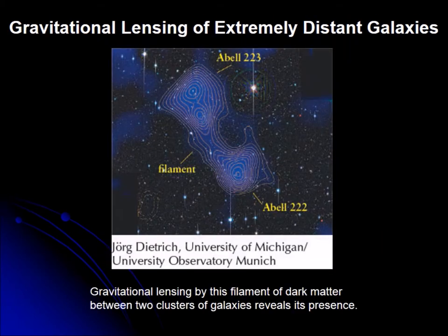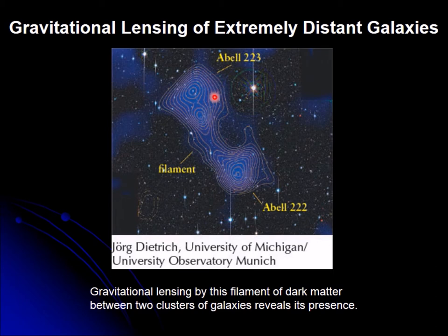This is a computer-generated image in which the lensing of two clusters of galaxies was reversed to give us the distribution of dark matter. This filament here is the dark matter that would produce the image we see around it.